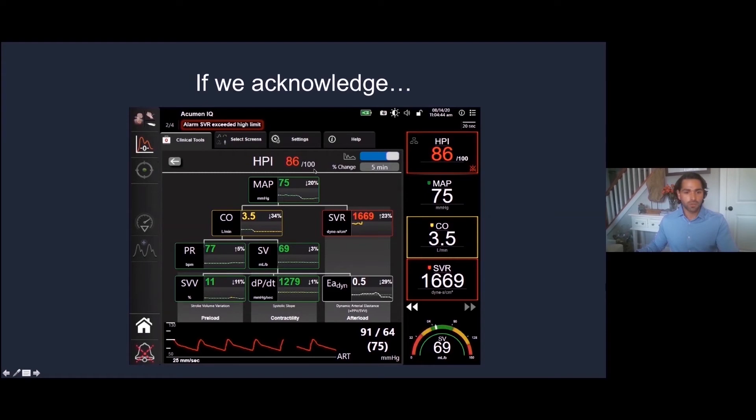We can also trend the data. This is a percent change. 20% down in MAP, 34% down in cardiac output, SVR increased 23%. This is all over five minutes and we can change all this. This is a good trend line to see where our patient's going.